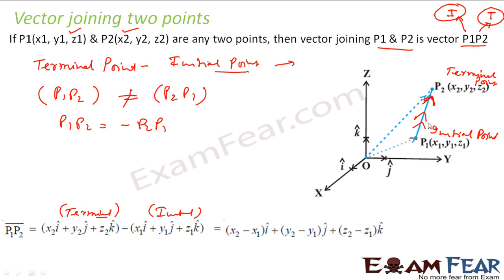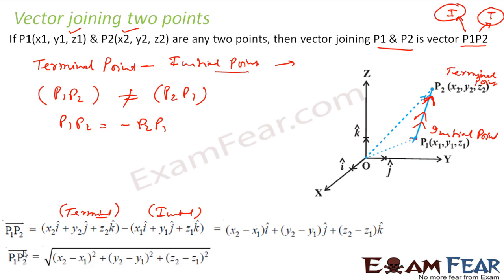When you say p1p2, you are going from p1 to p2. When you write p1p2, you write the terminal point first and then subtract the initial point — a little confusing, but that is the convention. The length of vector p1p2 is the root of (x2−x1)² + (y2−y1)² + (z2−z1)².